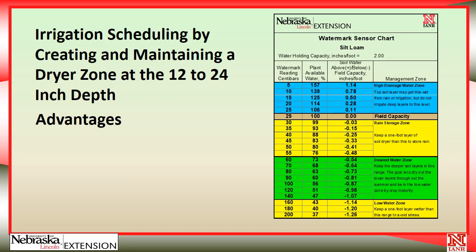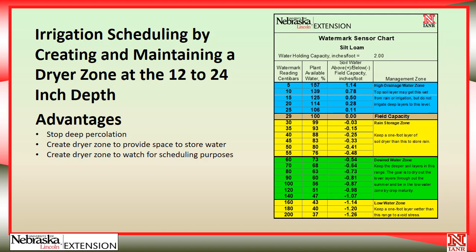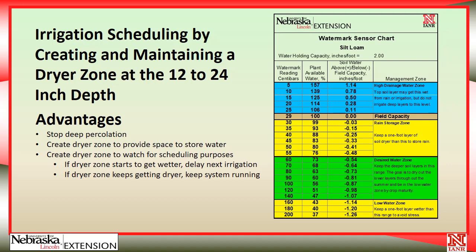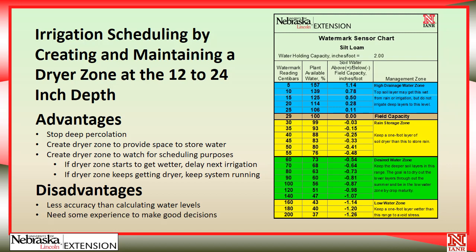The second advanced irrigation scheduling technique is to create and maintain a drier zone in the 12 to 24 inch depth. Advantages include stopping deep percolation, creating a drier zone to store water — mostly from planned rainfall — and using that zone as an irrigation scheduling indicator. If the drier zone gets wetter, you can delay the next irrigation a day or two; if it continues to dry, keep the system running. It is less accurate than calculating water levels and requires some experience.